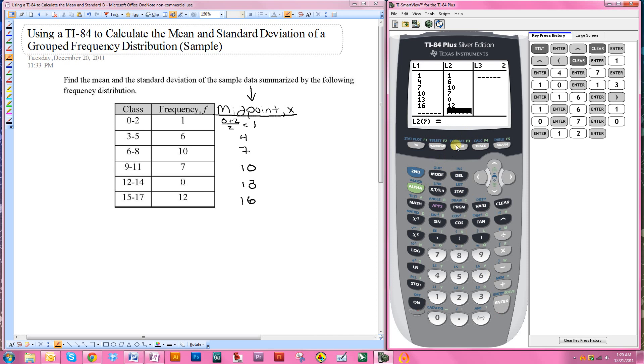Now that I have the frequencies and the midpoints put into my calculator, I just need to have the calculator tell me what the mean and the standard deviation are. So all I need to do is hit stat, then go over to calc, one-var stats.